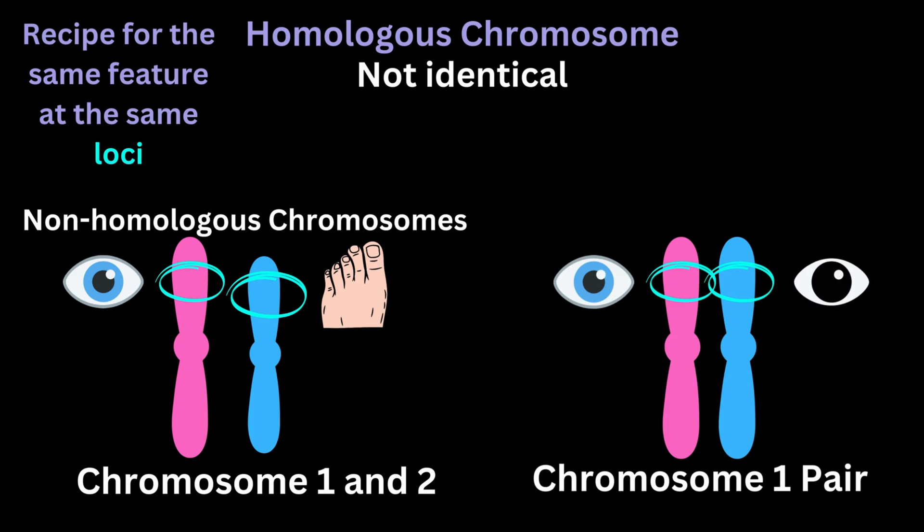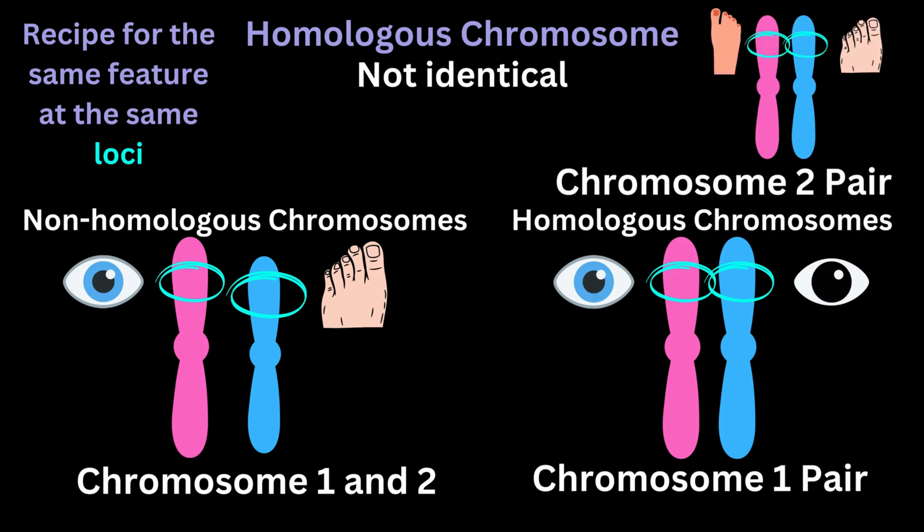DNA 1 from my mother and DNA 1 from my father are homologous chromosomes. DNA 2 from my mother and DNA 2 from my father are homologous chromosomes. So I hope the concept of homologous chromosomes is clear.